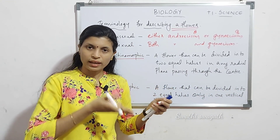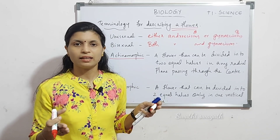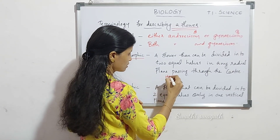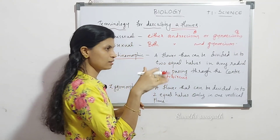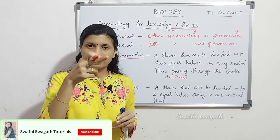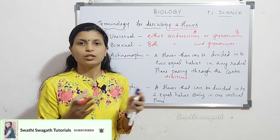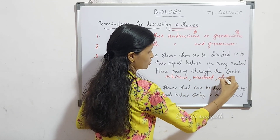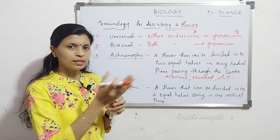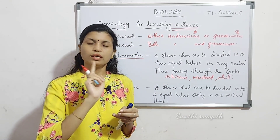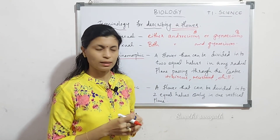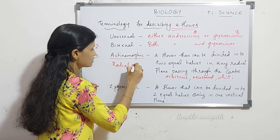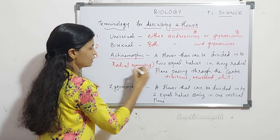If you pass through the center in any radial plane, that flower divides into equal halves in any radial plane — that flower is called actinomorphic. For example, hibiscus flower or mustard or chilli type of flowers. If all the petals are arranged symmetrically, you can cut the flower equally in any plane. That is actinomorphic, or remember this term also — radial symmetry. This type of symmetry is called radial symmetry.